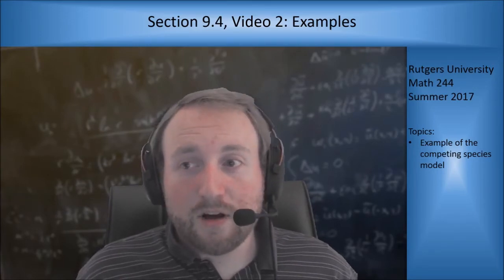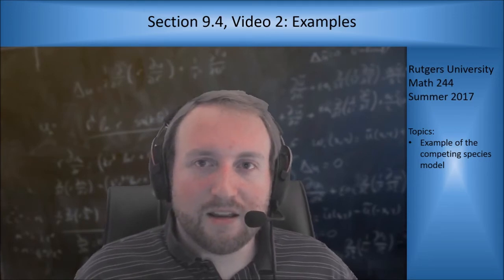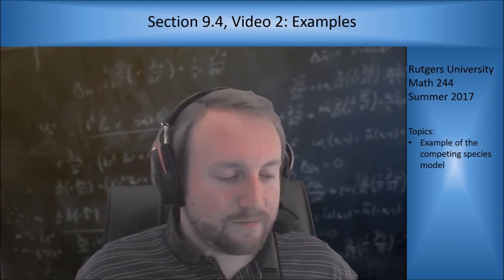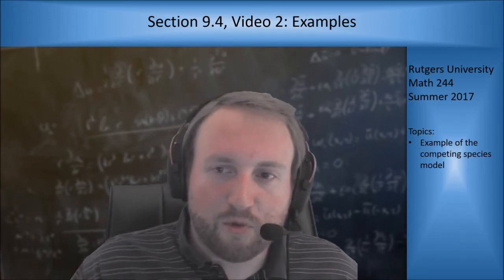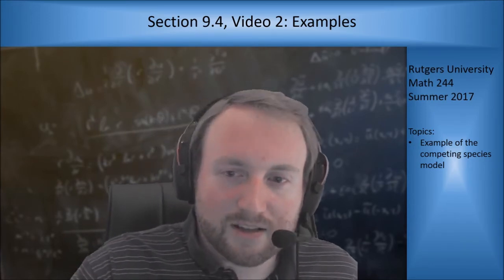Hey everyone, welcome to the next video for section 9.4. In this video we're going to do an example of the competing species model. We're going to use both the nullcline method and the general Jacobian analysis method to see what we get for our critical points. So let's go ahead and jump right into the example.